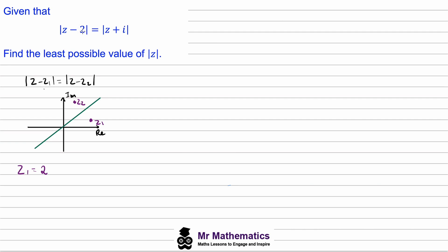There's no imaginary parts here, and z2 must be equal to negative i because when you multiply this negative by the negative i we get the positive i here. So these are the two fixed points on our Argand diagram.